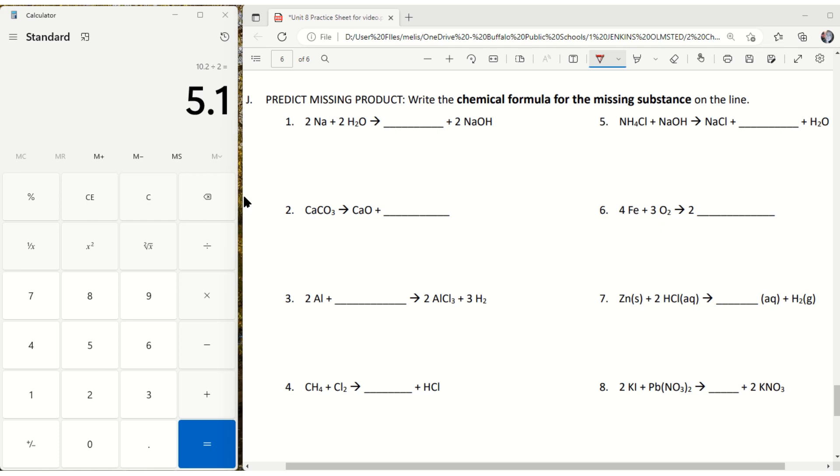So what I'd have to do is figure out how many of each element I have on each side and then what's missing. So for example, I have two NAs on this side and two NAs on this side. Okay, so the NA is not missing.